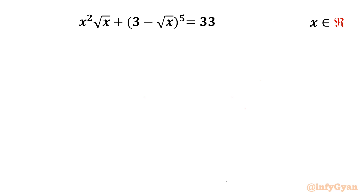Welcome back to InfiGyaan friends. Today in this video we are going to solve an amazing radical equation challenge: x times the square root of (x + 3) minus (√x)^5 equals 33. We have to find out all real solutions.